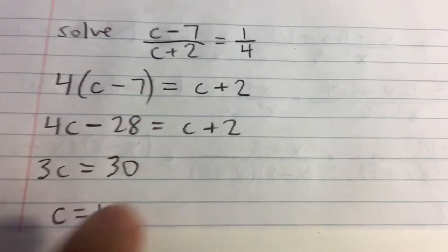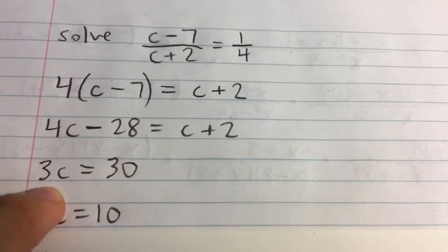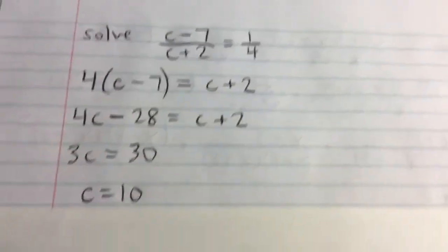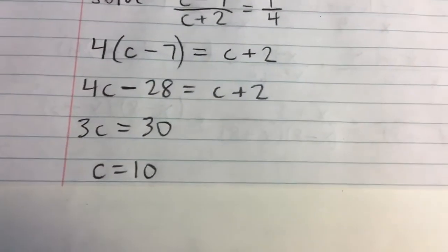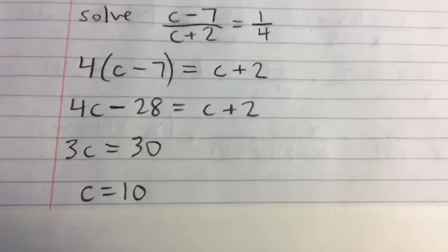Now we can solve for c by subtracting c from both sides. We'll have 3c on the left. Add 28 to both sides, and we get 2 plus 28, that's 30 on the right. Divide both sides by 3, and we get c equals 10. That's the final answer.